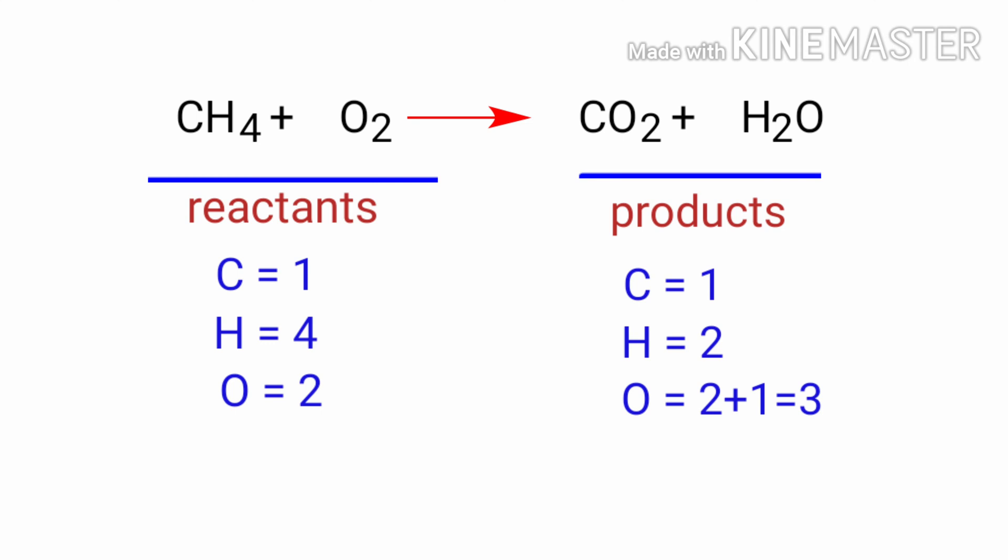In this equation, we need to balance the hydrogen atoms first. To do this, we need to put a coefficient of two in front of H2O. The hydrogen atoms are balanced.